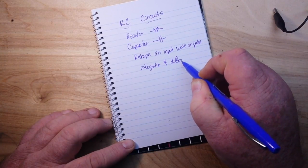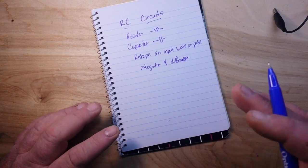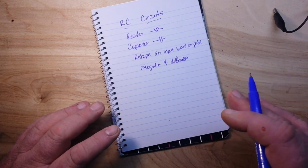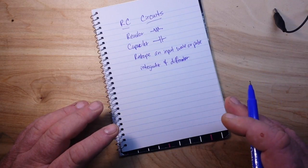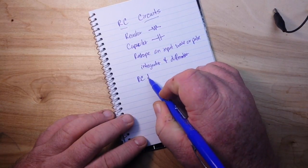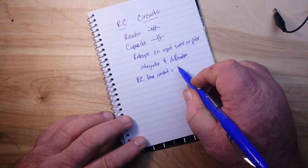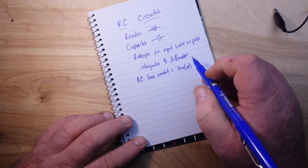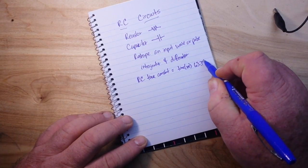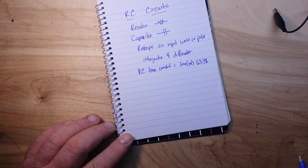Those two circuits are the integrator and the differentiator. The product of the R and C, the resistor and the capacitor in these circuits, is called the RC time constant. The RC time constant in seconds is the time it takes the capacitor to charge or discharge 63.3 percent.